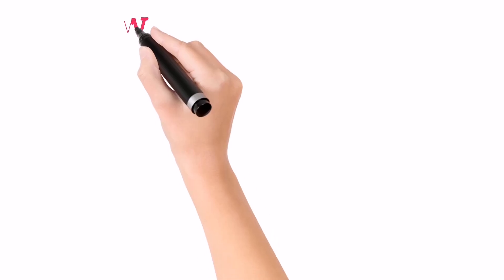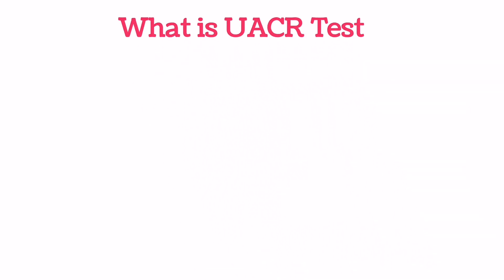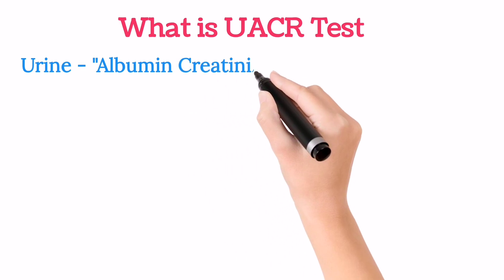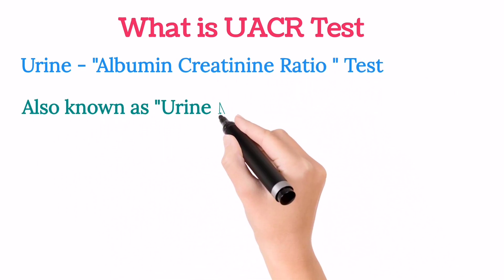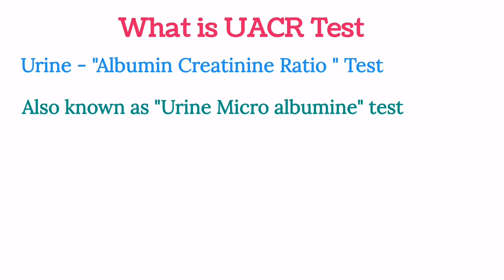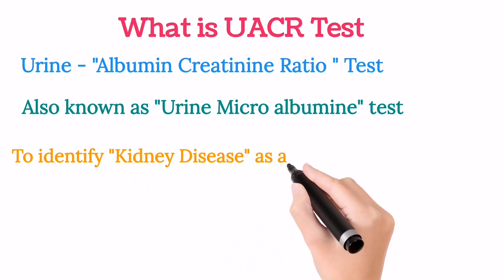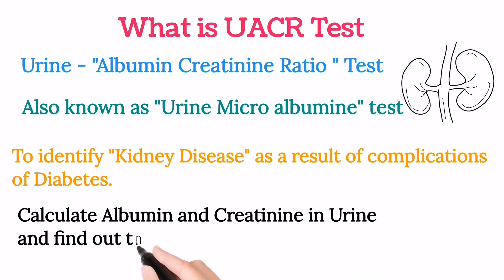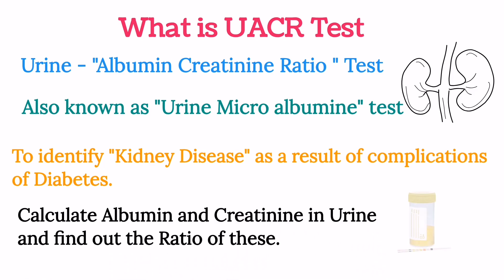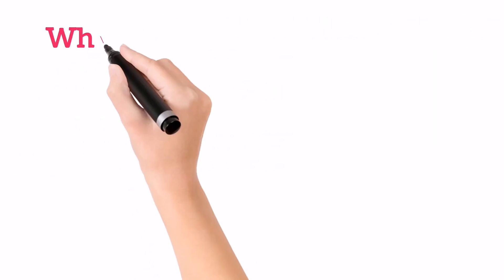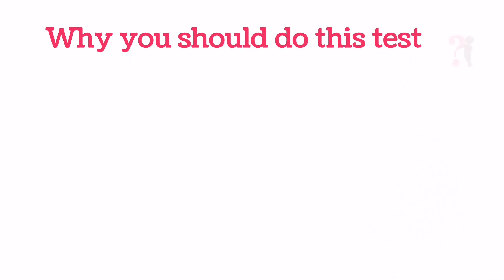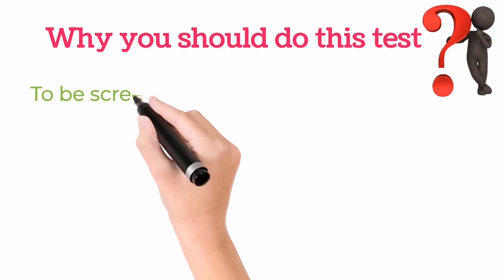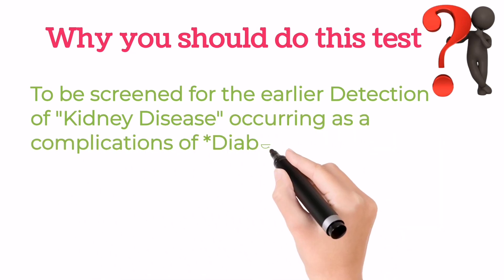UACR is a urine test which stands for the Urine Albumin Creatinine Ratio test. It's also known as the urine microalbumin test. This test is usually done to identify kidney disease that comes as a result of diabetes complications. First we calculate albumin and creatinine in urine, then we find out the ratio — that's why we call it the UACR test.